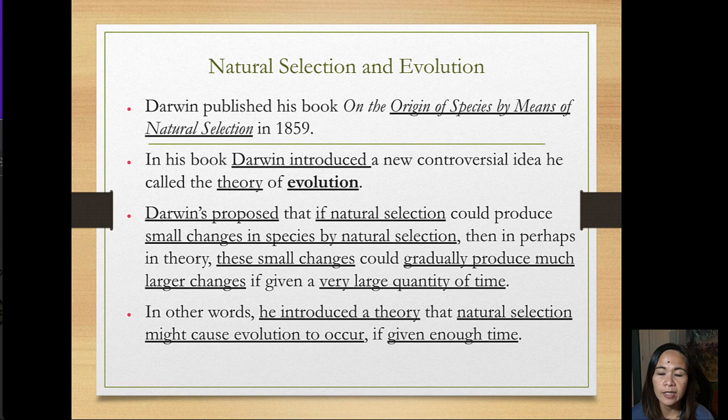Because of this, Darwin published his book On the Origin of Species by Means of Natural Selection in 1859. In his book, Darwin introduced a new and controversial idea he called the theory of evolution.